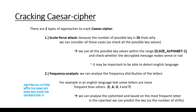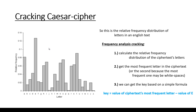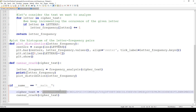Caesar cipher shifts all letters with the same key, which means this operation doesn't alter the distribution of the letters. The distribution will be approximately the same but shifted by a given number of letters. So we analyze the frequency distribution in order to find the key for the Caesar cipher.